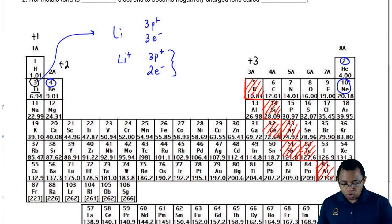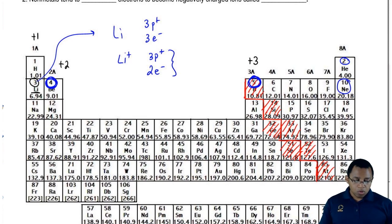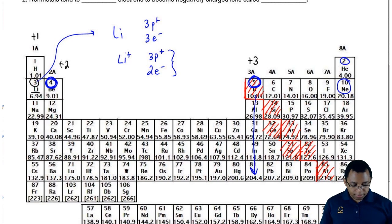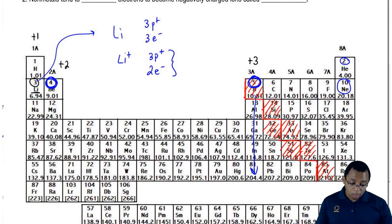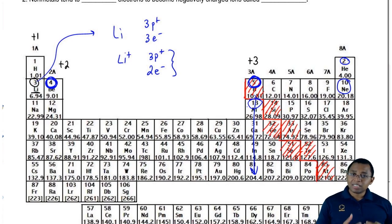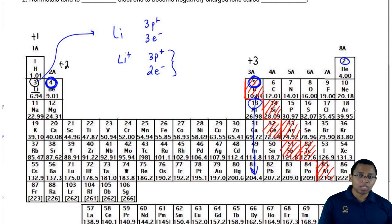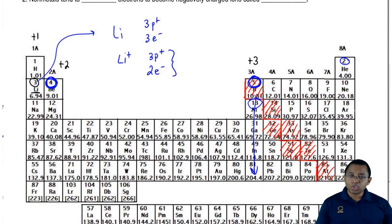In the same way, beryllium wants to lose two electrons to become just like helium, and boron tends to lose three electrons — a plus three charge — to become just like the nearest noble gas. For example, aluminum has atomic number 13 and loses three electrons to become 10 electrons, just like neon. So metals in groups 1A, 2A, and 3A have charges of plus one, plus two, and plus three respectively.